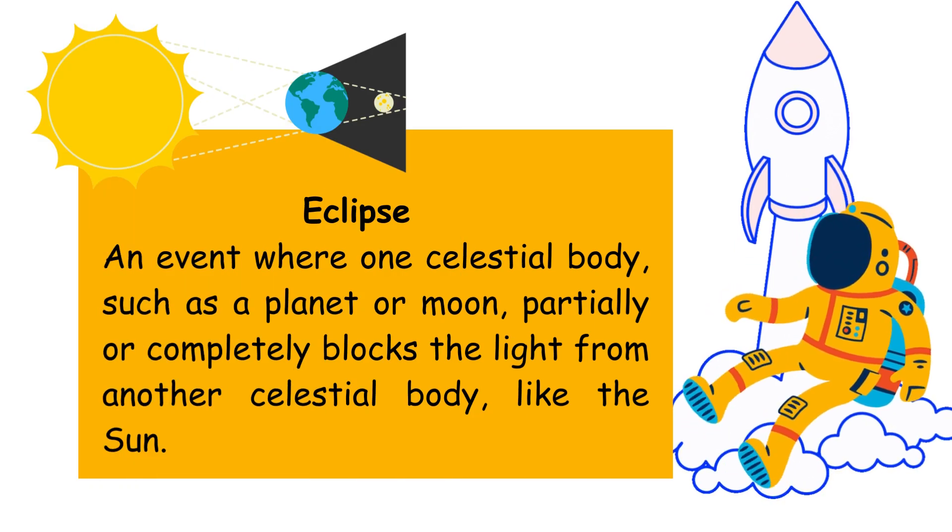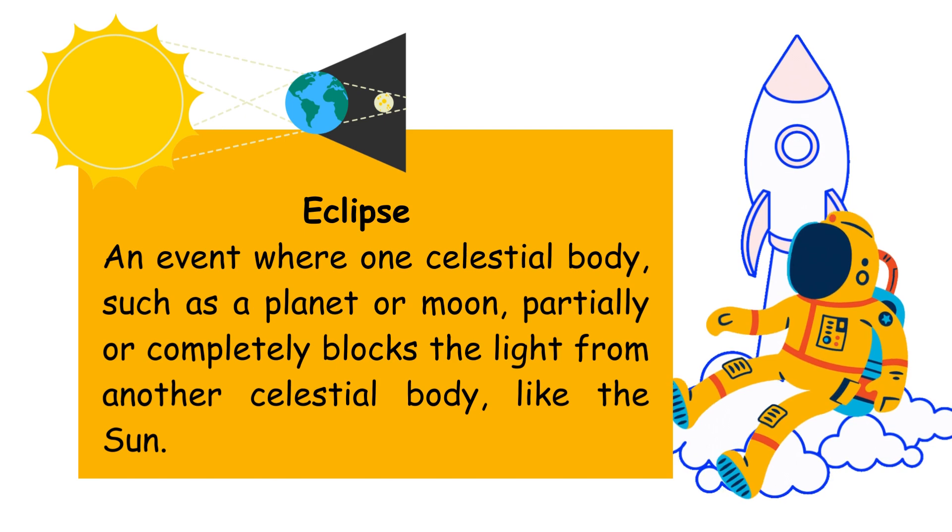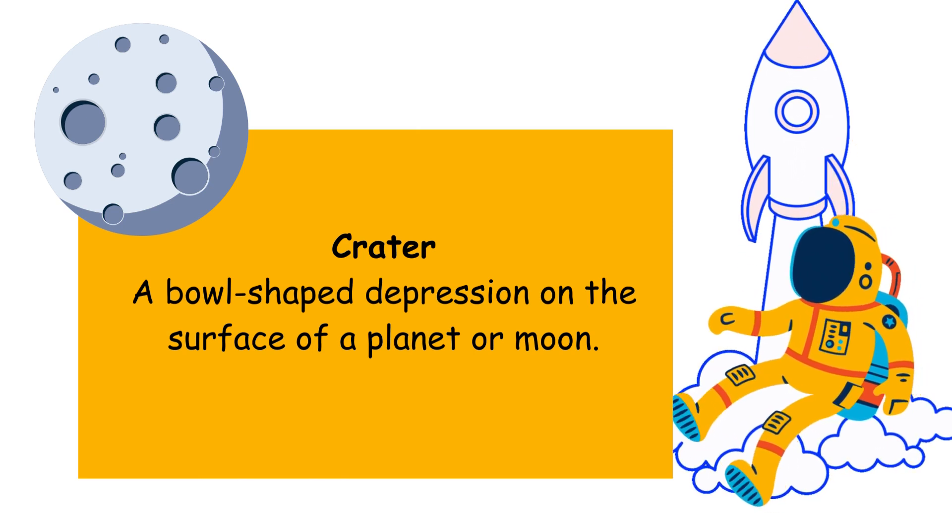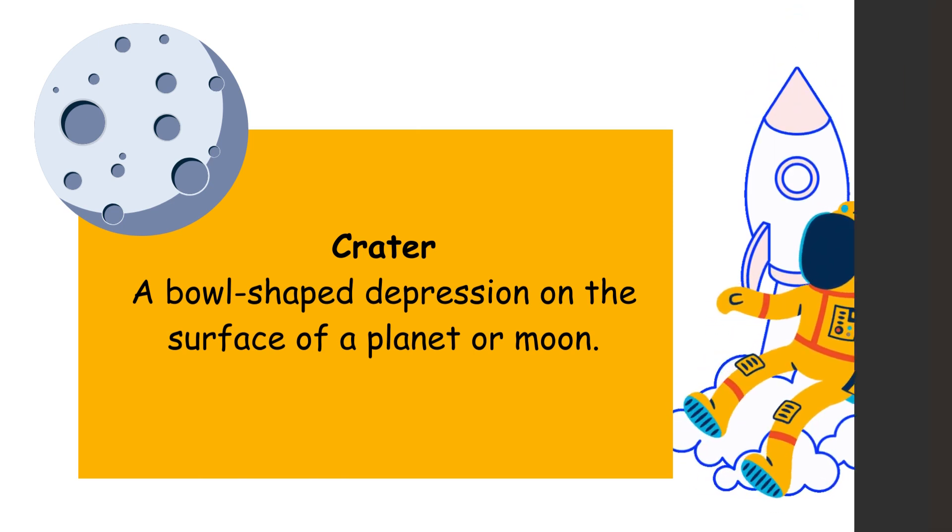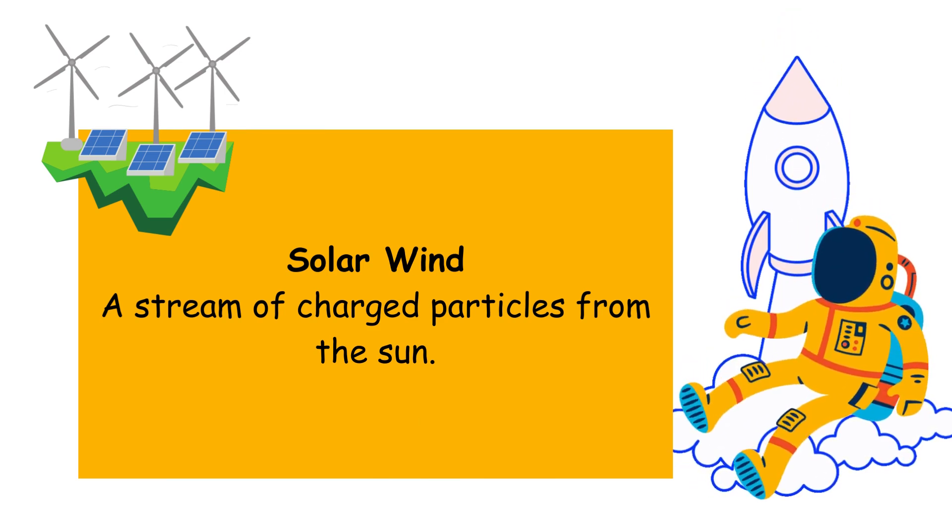Eclipse: when one celestial object blocks another, like a solar eclipse when the Moon covers the Sun. Crater: a bowl-shaped depression on the surface of a planet or Moon. Solar wind: a stream of charged particles from the Sun.